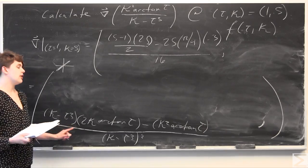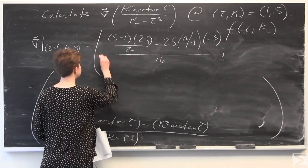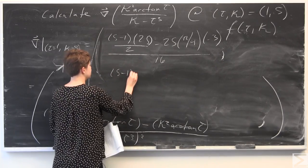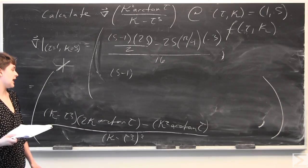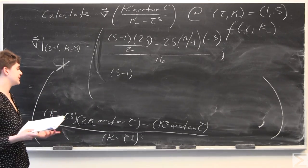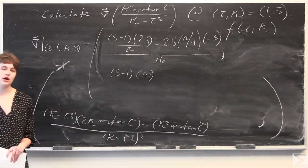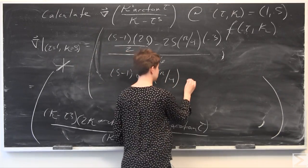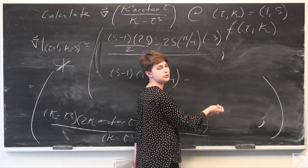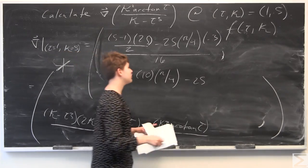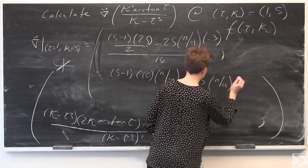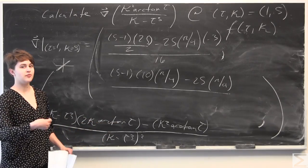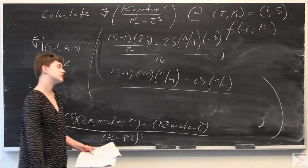For the second component: kappa minus tau cubed is 5 minus 1. In the numerator we have 2 kappa times arctangent of tau — that's 2 times 5 equals 10, and arctangent of 1 is pi over 4. Minus kappa squared times arctangent of tau — kappa squared is 25, arctangent of tau is pi over 4. In the denominator, kappa minus tau cubed all squared: 5 minus 1 is 4, and 4 squared is 16.